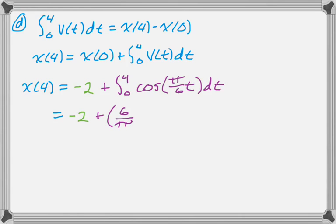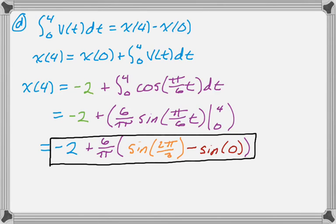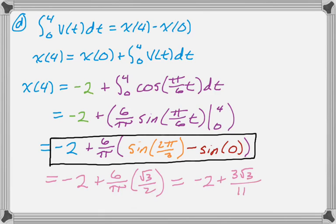There should be a π/6 on the inside, so I put 6/π on the outside to balance it out. The antiderivative of cosine is sine, giving (6/π) · sin(π/6 · t), evaluated from 0 to 4. It's always good to take the derivative of what you think the antiderivative is to check. This gives negative 2 plus (6/π)[sin(2π/3) − sin(0)]. The sine of 2π/3 is √3/2, and sine of 0 is 0, so the final answer simplifies to −2 + (6/π)(√3/2), which you can also write in a further simplified form.